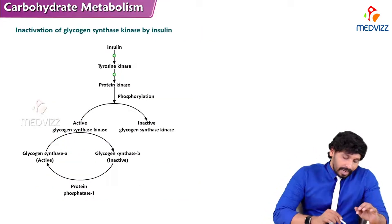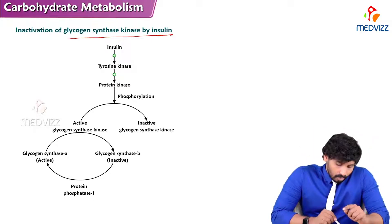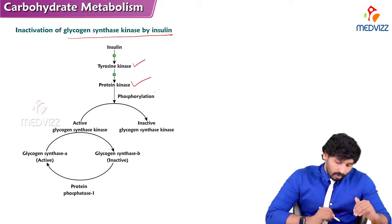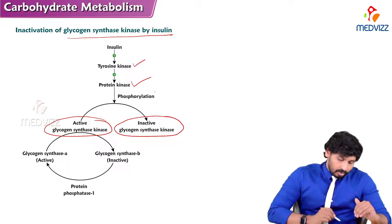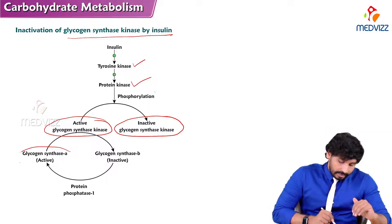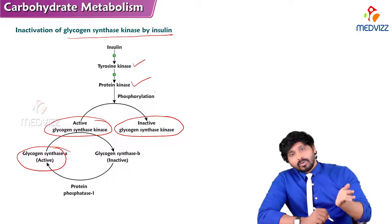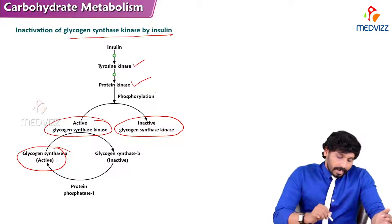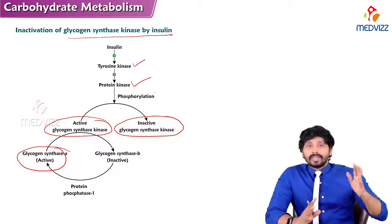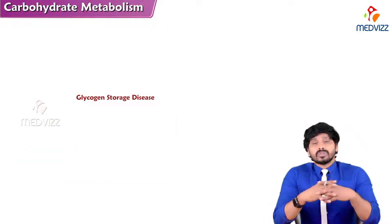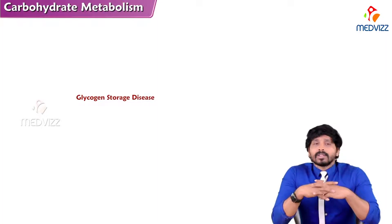Regarding inactivation of glycogen synthase kinase by insulin: insulin activates tyrosine kinase, which activates a downstream protein kinase that phosphorylates glycogen synthase kinase 3, converting it from its active form to an inactive form. This prevents it from phosphorylating and inactivating glycogen synthase, so glycogen synthase remains active and promotes glycogen synthesis. This is how kinases are involved in the activation and inactivation of glycogen synthase and glycogen phosphorylase. That is all about the allosteric and hormonal regulation of glycogen metabolism. Thanks for watching.